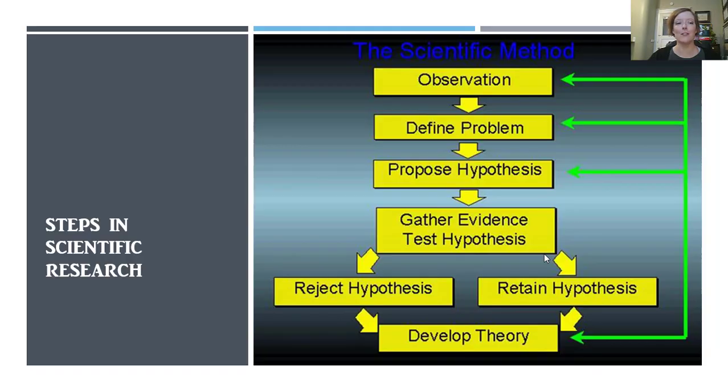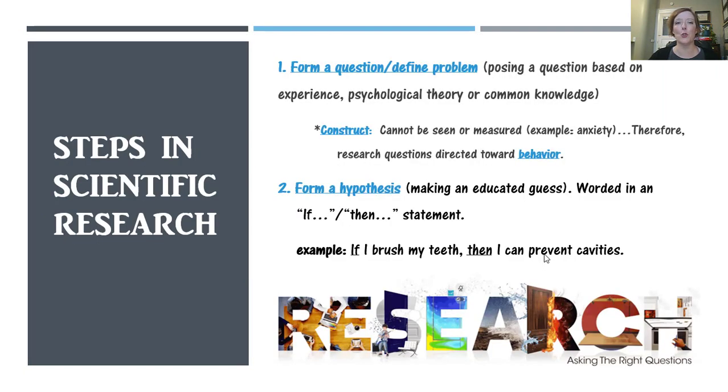So the first thing we're going to talk about is the steps of scientific research. The first thing that we have to do when we are doing scientific research of any kind, including psychology, is first off, you have to start with a question. You have to have something that you want to figure out. You have to define a problem. So it could be as simple as posing a question based on experience that you have or something that you know a little bit about, but you don't feel like there are enough answers.